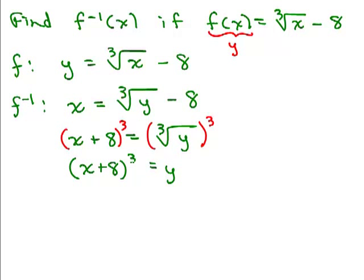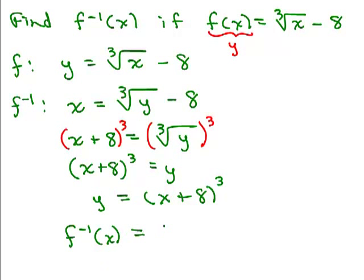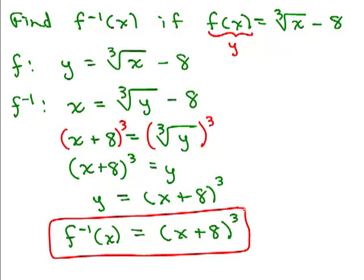To solve for y, we cube both sides. That gives y equals x plus 8 cubed. Writing in function notation, f inverse of x equals x plus 8 cubed. You could expand this by multiplying x plus 8 times x plus 8 times x plus 8, but we'll leave it in that form.